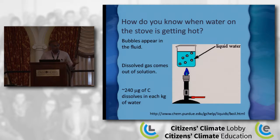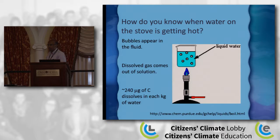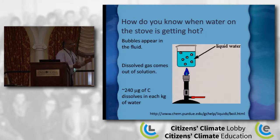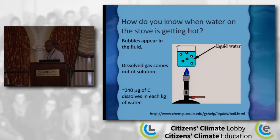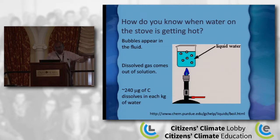For water, in the current world about 240 micrograms of carbon is dissolved in each kilogram of water. That doesn't sound like a lot, but as Andrew just pointed out, that's 38,000 billion tons of carbon in the ocean versus about 800 in the atmosphere. So most of the carbon in the ocean-atmosphere system is actually in the ocean.